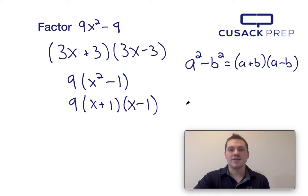And there you have it. That's how you factor 9x squared minus 9 using the difference of squares equation, as well as how you can take out the greatest common factor and then use the difference of squares equation. Thank you for watching.